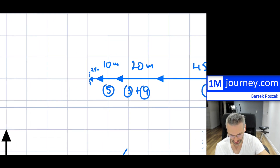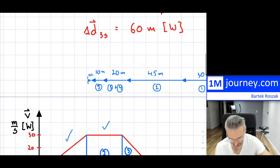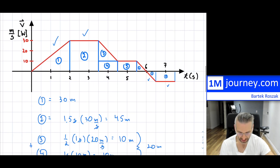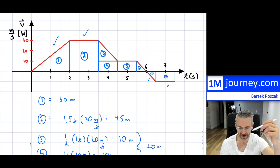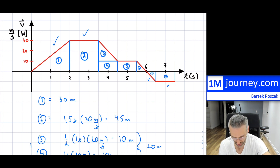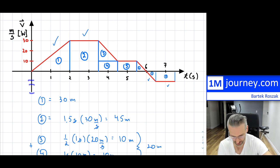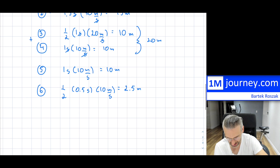Now what happens — it does start to speed up again, going from zero. You might think, well, it's negative — what do you mean it's speeding up? It's because of the direction: it's on the negative side now, so now it's going east.